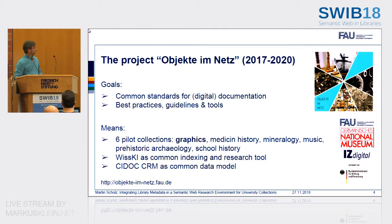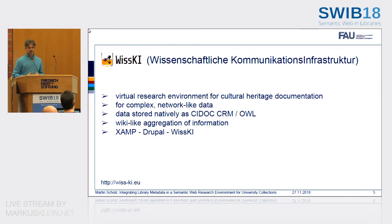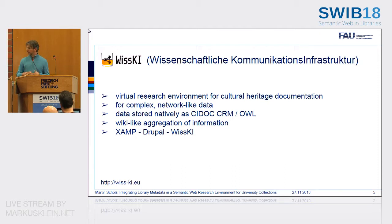From the software tool side, we mainly use the WISKII research environment as a common platform for indexing and research. WISKII is an acronym for Wissenschaftliche Kommunikationsinfrastruktur, which translates as scientific or scholarly communication infrastructure. It is basically a virtual research environment for cultural heritage documentation. The software was developed from within the museum community, so it is especially designed to match the needs of museums. But as we found out, it is also very well suited for research projects in the digital humanities.